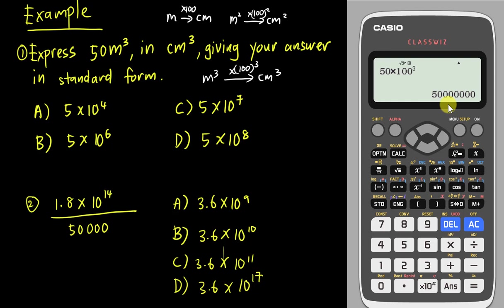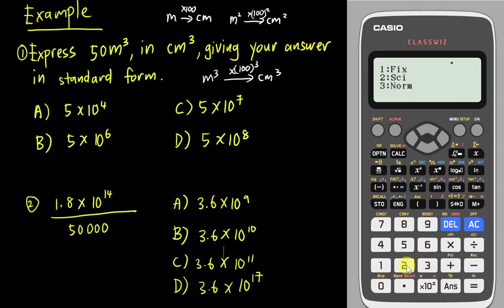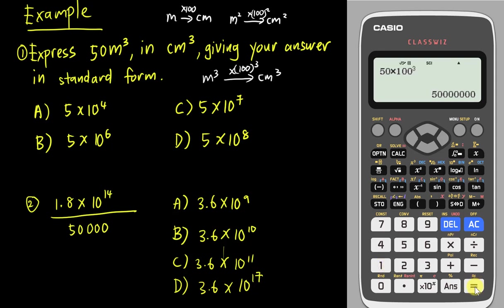But I want standard form — what I can do is go into Shift menu, number 3, number 2. The answer here only has one significant figure, so it's fine to use 1. I use 1, type enter again, and I can straight away get the answer, which is C.